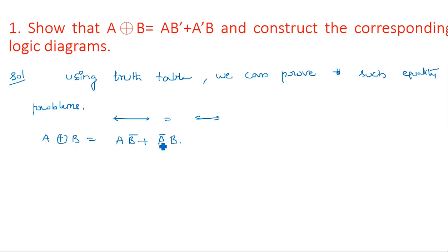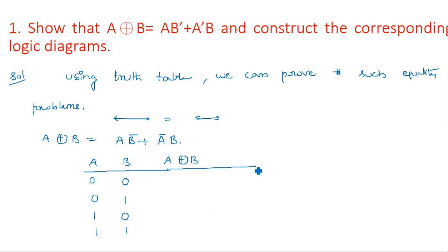First we need to take the truth table with two inputs A and B. How many inputs we have in the given expression, that many inputs we should consider in the truth table. For two inputs there are four combinations: 00, 01, 10, 11. For XOR operation, output is one when there is an odd number of ones in the inputs. So: 00→0, 01→1, 10→1, 11→0.